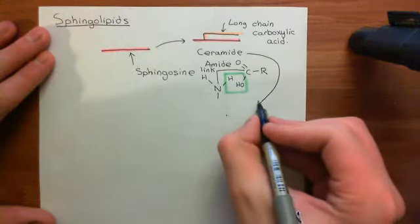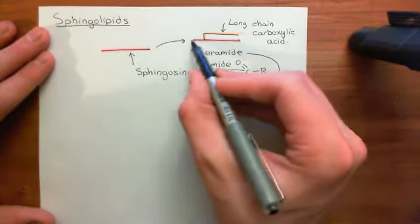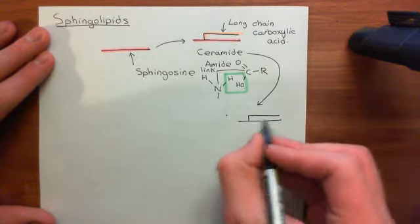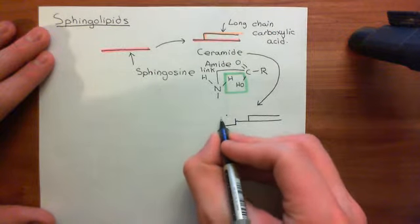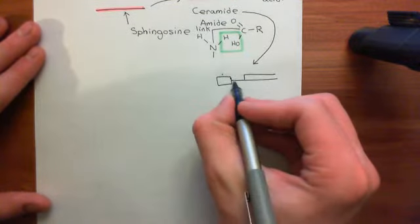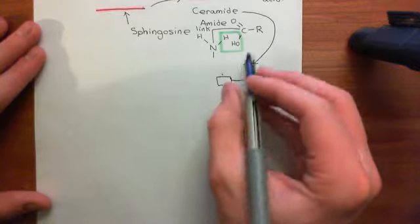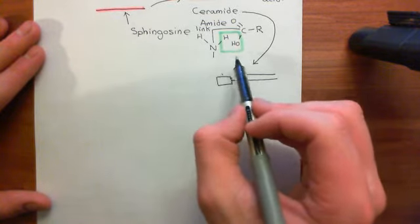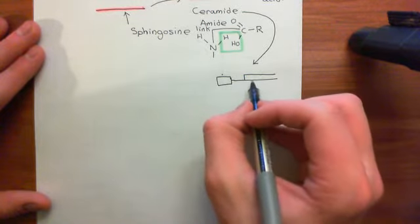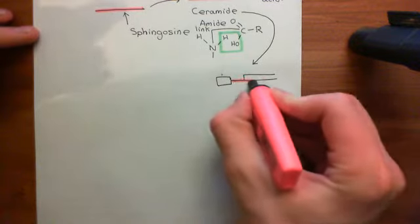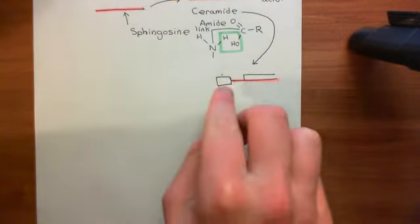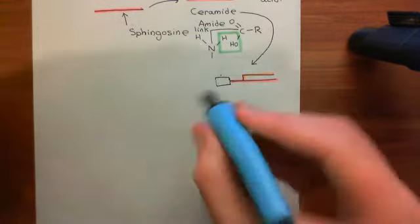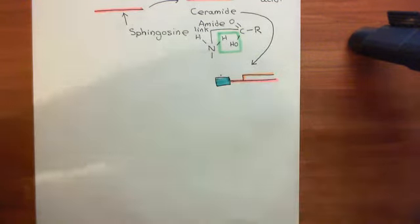To get a sphingolipid, you take a ceramide — which is a sphingosine molecule with a long-chain carboxylic acid bound to it — and then you add a group onto the first carbon of the sphingosine molecule. The head of the sphingosine molecule has three important groups: an amino group off the second carbon, and two alcohol groups off the first and third carbons. We attach a group onto the alcohol group of the first carbon of the sphingosine molecule, and this creates a sphingolipid.